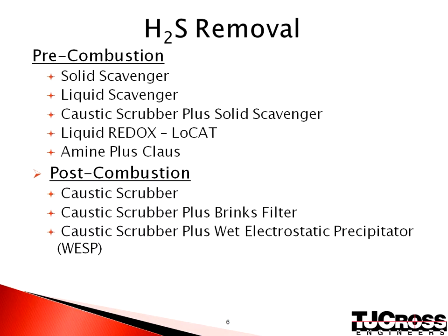Gas associated with thermal enhanced oil recovery operations may contain hydrogen sulfide, or H2S, that must be treated prior to combustion due to safety and air permit issues. Pre-combustion treatment options depend on H2S levels. Solid and liquid scavengers can effectively treat H2S levels up to hundreds of parts per million. Caustic scrubbers, liquid redox such as LOCAT, and amine systems are usually required up to thousands of parts per million. In most cases, H2S must be reduced to below 4 parts per million. If H2S levels are above 10,000 parts per million, or if the gas contains organic sulfur compounds such as mercaptans, then post-combustion treatment is usually the most cost-effective treatment.